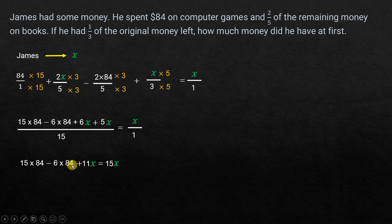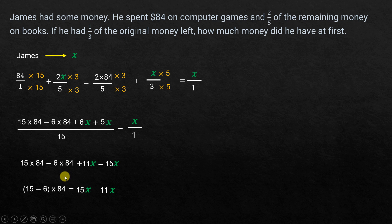Looking at 15×84 minus 6×84, the common factor is 84. We can take 84 out: (15 − 6)×84 = 9×84. We then subtract 11X from both sides — 11X cancels on the left — leaving 15X minus 11X equals 4X on the right. This reduces the number of calculations needed.